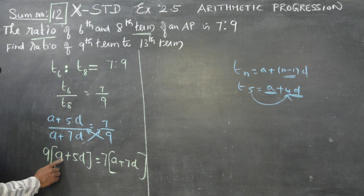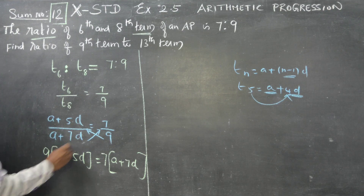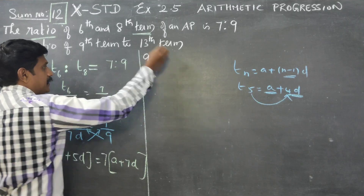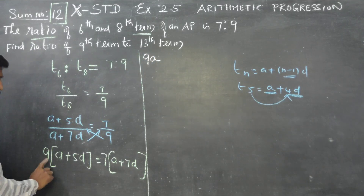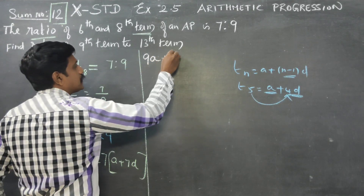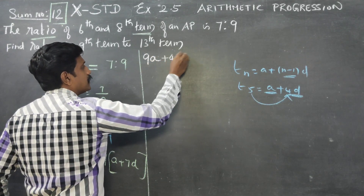Expanding the left side: 9 into A plus 5D gives 9A plus 45D.